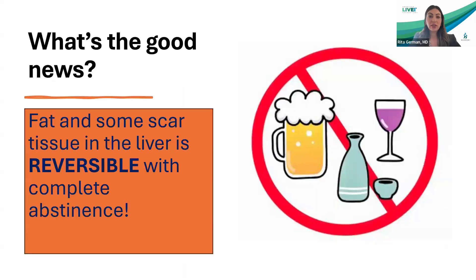Now for the good news: fat and even some scar tissue is reversible — reversible with abstinence. There is no safe amount of alcohol to drink in the setting of any form of liver disease. So even if there's a little bit of scar tissue or any fat in the liver, there's no safe amount of alcohol to drink. But with abstinence, some of those things can get better.